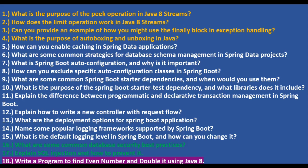What is Spring Boot auto configuration and why is it important? Spring Boot auto configuration is a feature that automatically configures Spring beans and settings based on your application's dependencies and properties. It creates some beans automatically so you can get started quickly — it handles some of the boilerplate work for you.